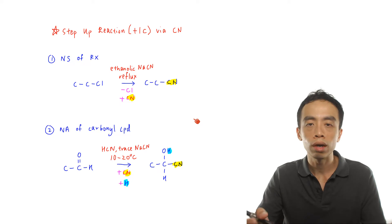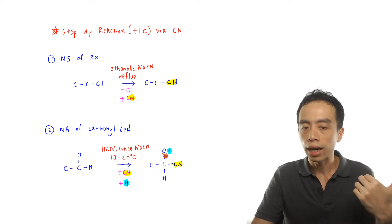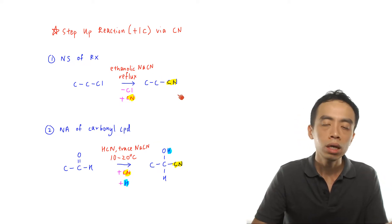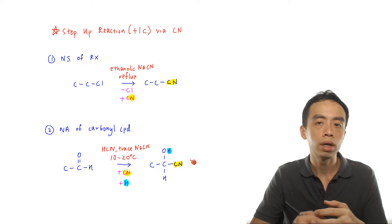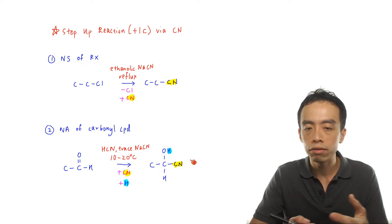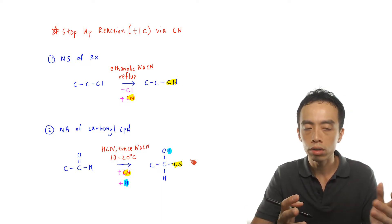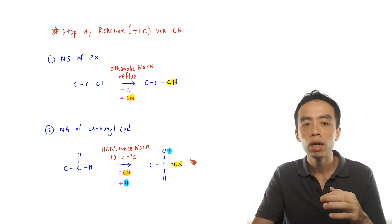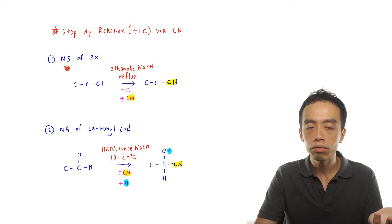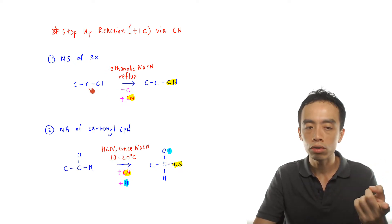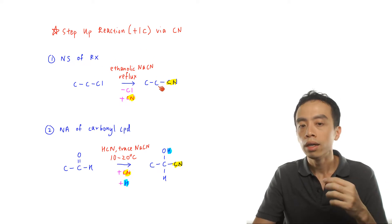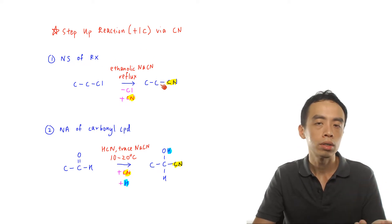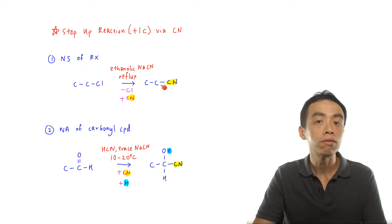Now actually, these two step-up processes are not interchangeable, so we don't want to have the impression that we can use either one of them, because the total number of functional groups in the product is actually very different. You notice that for substitution reaction of haloalkane, this carbon has one functional group.